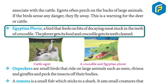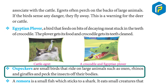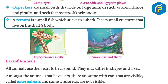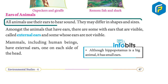The Egyptian plover is a bird that feeds on bits of decaying meat stuck in the teeth of a crocodile. The plover gets its food and the crocodile gets its teeth cleaned. Oxpeckers are small birds that ride on large animals such as oxen, rhinos, and giraffes and peck insects off their bodies. A remora is a small fish that sticks to a shark and eats small creatures living on the shark's body.